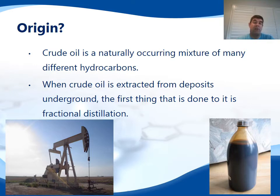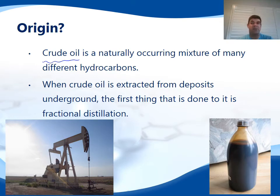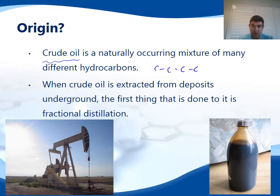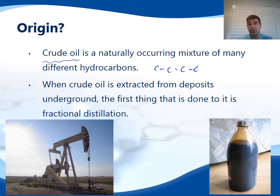Most of the hydrocarbons that we use commercially and domestically come from crude oil. Crude oil is a naturally occurring mixture and it contains a large number of hydrocarbons with many different carbon chain lengths. Very small carbon chains like ethene are gases at room temperature and may be associated with the crude oil as a gas deposit, but they can also be extracted from crude oil by cracking larger molecules into smaller molecules — we'll look at that process in the next video.